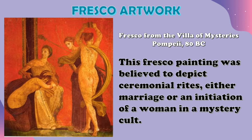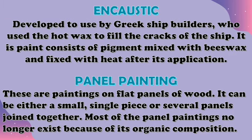Here is an example of a fresco artwork from the Villa of Mysteries. This fresco painting was believed to depict ceremonial rites, either marriage or an initiation of a woman in a mystery cult. Next is Encaustic, which was developed and used by Greek shipbuilders who used hot wax to fill the cracks of ships. It is paint that consists of pigment mixed with base wax and fixed with heat after its application.